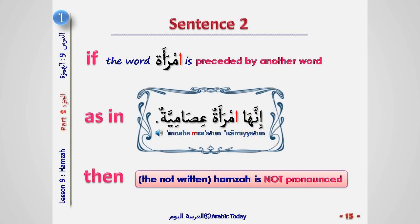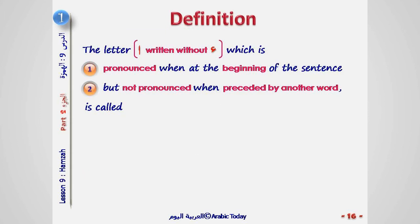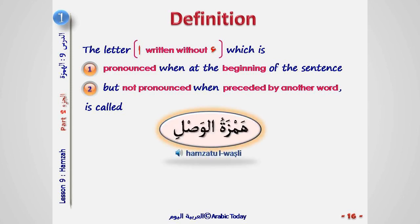Sentence 2: if the word Imra'ah is preceded by another word, as in Inna hamra'atun, then the not-written Hamza is not pronounced. More generally, the letter Alif written without Hamza, which is pronounced when at the beginning of the sentence but not pronounced when preceded by another word, is called Hamzatul Wasli.